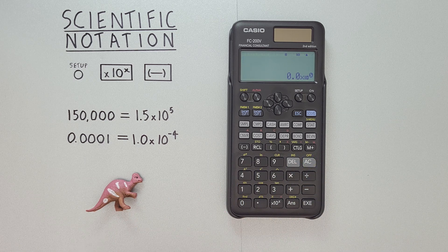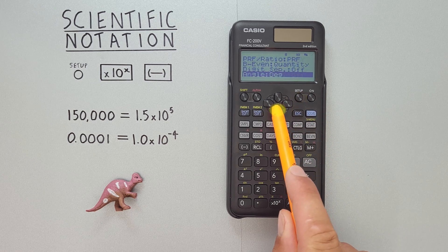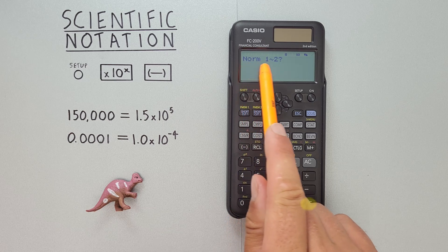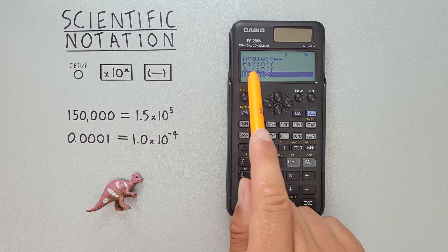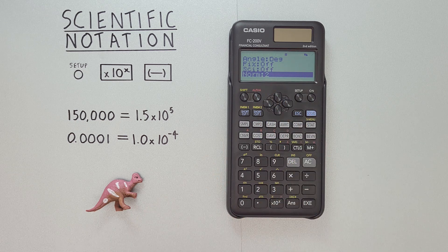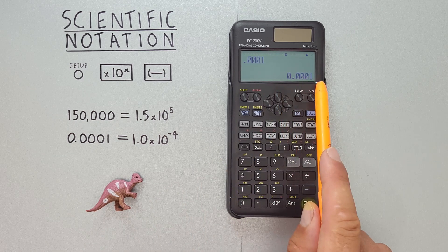If we're done with this and want to go back to our normal mode, again we go to setup, scroll down until we get to norm. We select that. It'll ask us normal mode 1 or 2. I like to use number 2, so we'll select 2. You can now see SCI is now off, and the word SCI has disappeared from the top of our screen. We can hit escape to get out of there. And now if we enter our 0.0001, we're back to displaying all our digits.